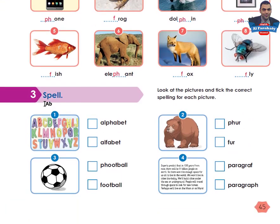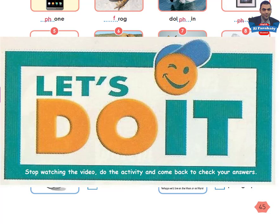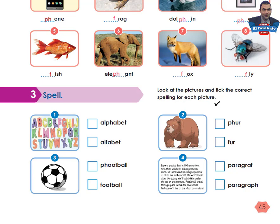Activity 3 — Spell: look at the pictures and tick the correct spelling for each picture. The correct spellings are: Alphabet, Fair, Football, Paragraph.